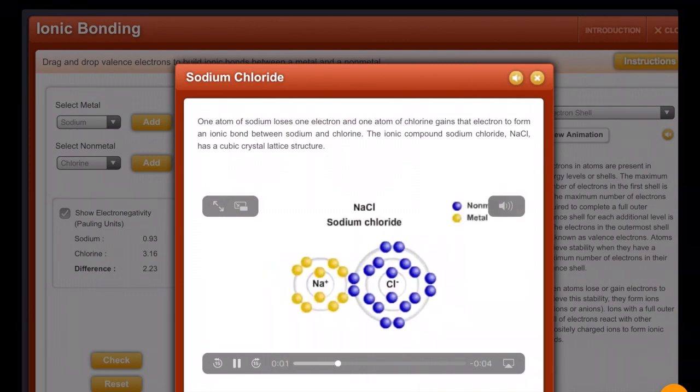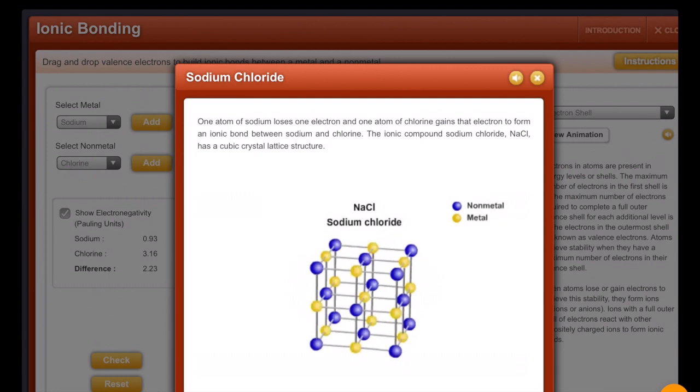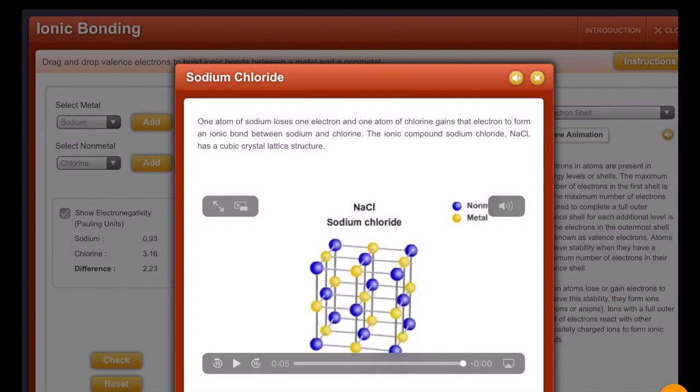So ionic compounds are like salts, or are salts like salt and how salt is a crystal. Inside of the salt crystals, the atoms are arranged like this. And there's lots you can read and listen to here.